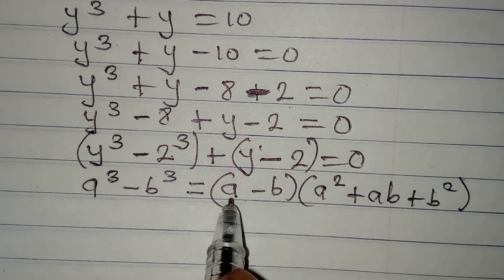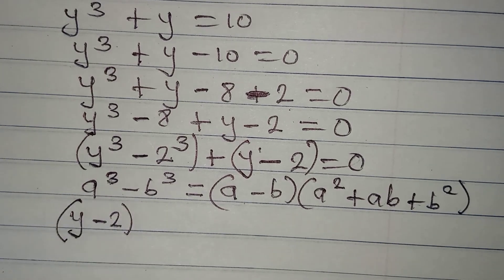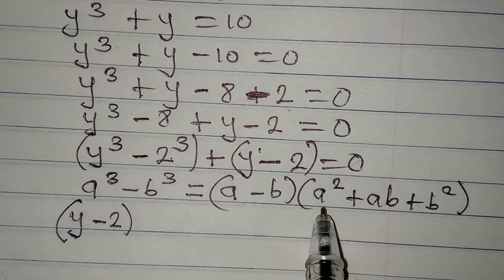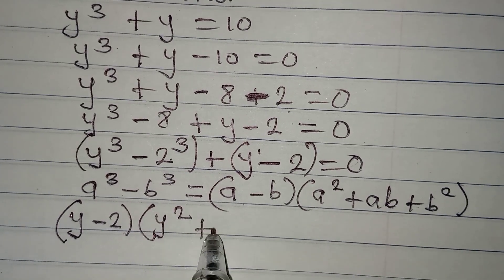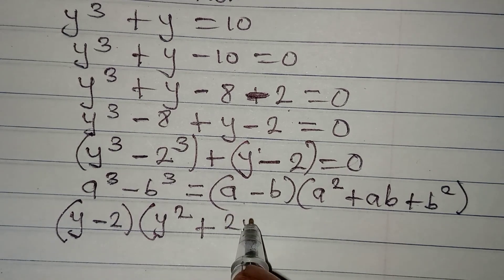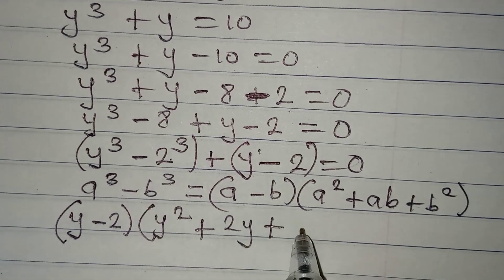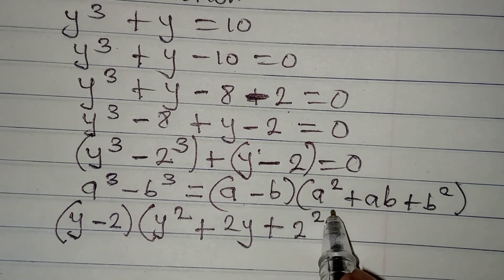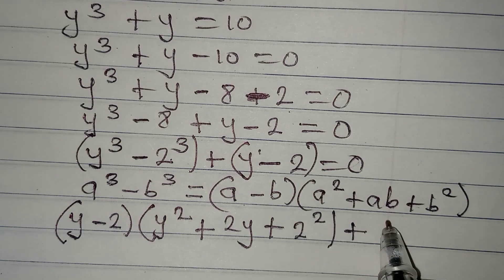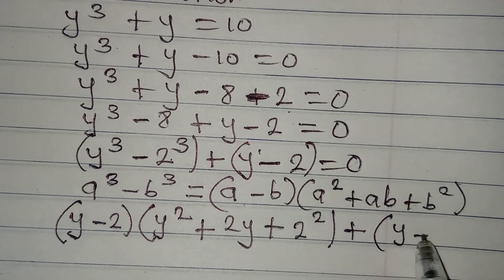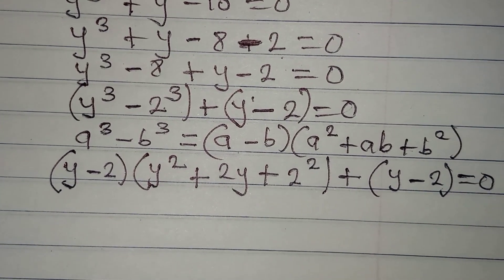In the first bracket, in place of a minus b, we write y minus 2. Then a squared becomes y squared, ab becomes y times 2 which is 2y, and b squared becomes 2 squared. So we have y minus 2, times y squared plus 2y plus 2 squared, plus the second bracket y minus 2, all equal to 0.